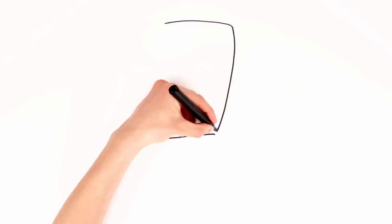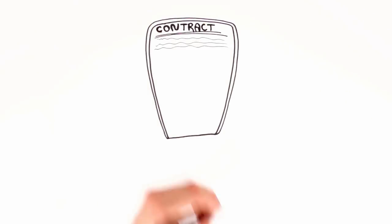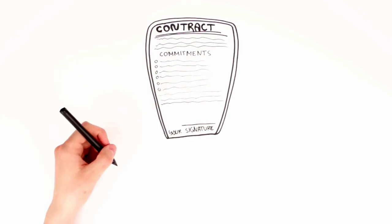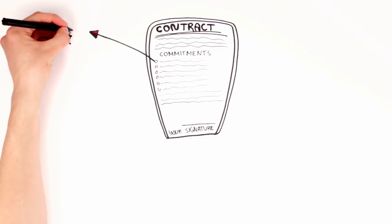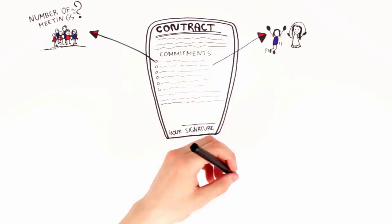Some exchange groups have chosen to write up a group contract or agreement. Such a document can make it very clear to the whole group what level of commitment is required. For example, the number of meetings that will be held to prepare for the exchange, the type of activities that the group will undertake.